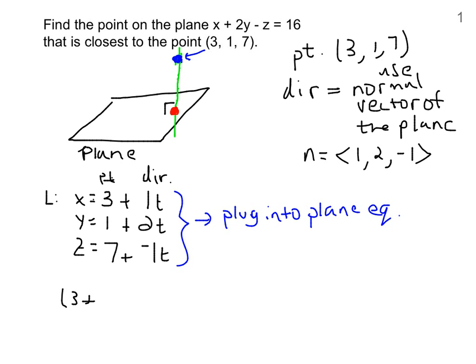So, (3 + t) plus 2 times (1 + 2t) minus (7 - t) should be equal to 16. And we'll get the time t that it takes us to be on the line and on the plane at the same time. 3 plus t, plus 2 plus 4t, minus 7 plus t, has to equal 16.